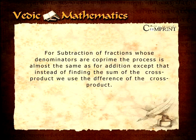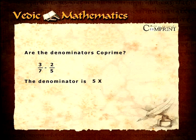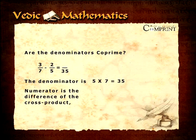For subtraction of fractions whose denominators are co-prime, the process is almost the same as for the addition, except that instead of finding the sum of the cross product, we use the difference of the cross product. Are the denominators co-prime? Yes, the denominator is 5 multiplied by 7 which equals 35. The numerator is the difference of the cross product, that is 3 multiplied by 5 minus 2 multiplied by 7 equals 15 minus 14 which equals 1.